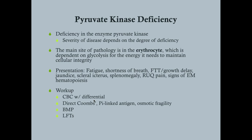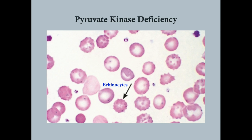On blood smear, you'll see echinocytes — red blood cells with small indentations from the cell shriveling due to hypotonic cytosol against hypertonic medium. The osmotic pressure gradient causes these characteristic indentations, basically the cell collapsing inward. These echinocytes are the hallmark finding on smear for pyruvate kinase deficiency.